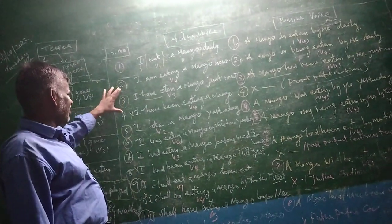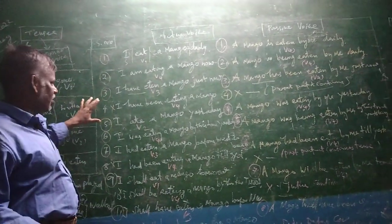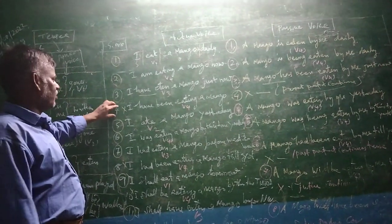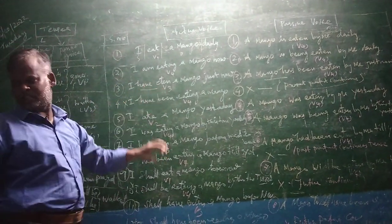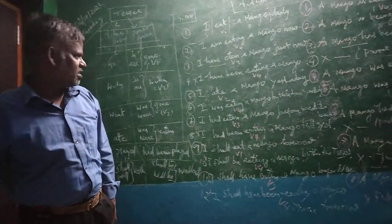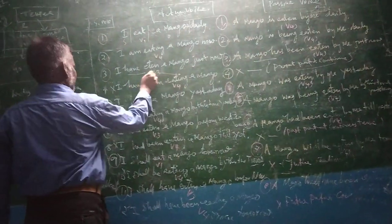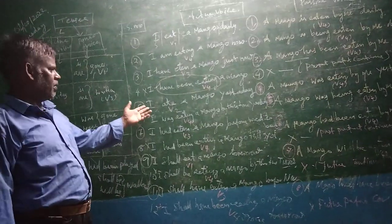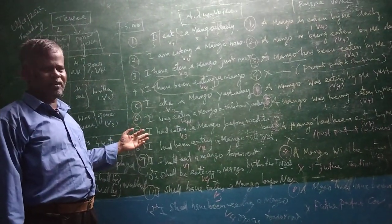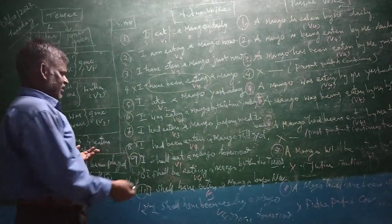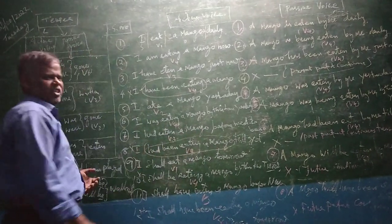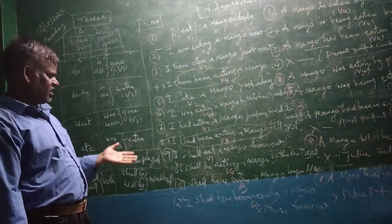Next: simple past, past continuous, past perfect — we can change to the passive form. But in the past perfect continuous, we cannot change. So next, simple future — we can change to the passive form. But the future continuous we cannot change. Future perfect — we can change to the passive form. But the twelfth form, future perfect continuous tense, has no passive form because English speakers do not change this — it would be committed as a mistake.